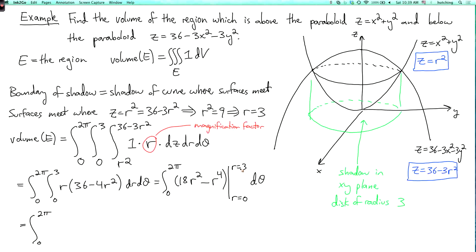So putting r equals 3 in here, well, I get 18 times 9, which is 162 minus 81, so I get 81.